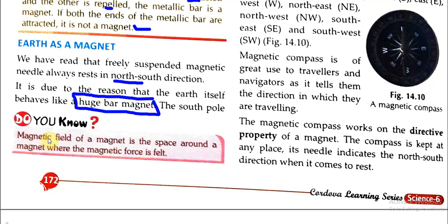A magnetic field is the space around a magnet where the magnetic force is felt. We have seen that a bar magnet has a magnetic field around it.